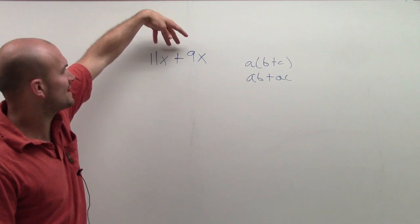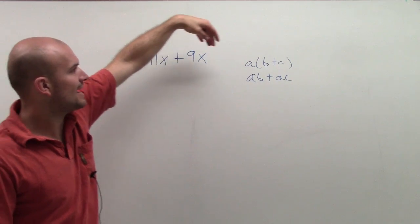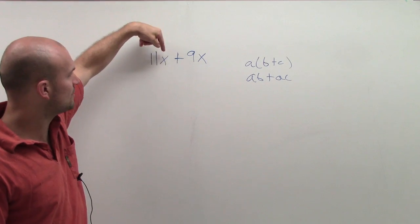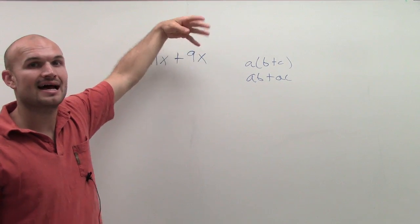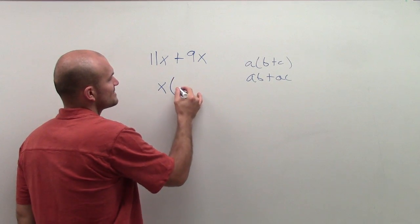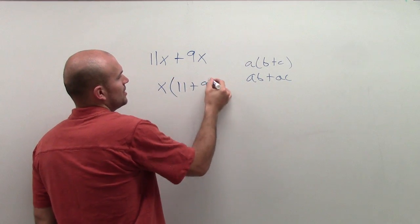So what I want to do is can I rewrite this so it looks like the distributive property? And since these are both being multiplied by x, what I'm going to do is say, since they're both being multiplied by x, I can just rewrite this problem like this.